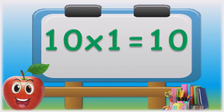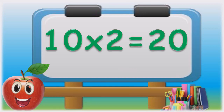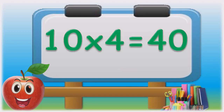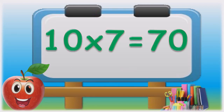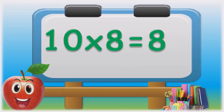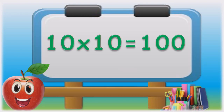Ten ones are ten. Ten twos are twenty. Ten threes are thirty. Ten fours are forty. Ten fives are fifty. Ten sixes are sixty. Ten sevens are seventy. Ten eights are eighty. Ten nines are ninety. Ten tens are one hundred.